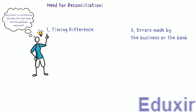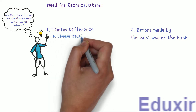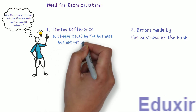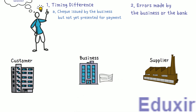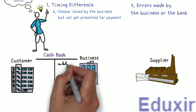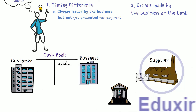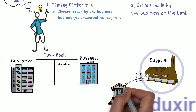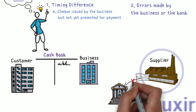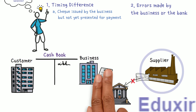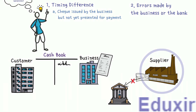One reason for timing difference is checks issued by the business but not yet presented for payment. When the business issues a check to the supplier or creditor, it is immediately entered on the credit side of the cashbook. The supplier or creditor has to encash this check by presenting it at the bank. If they do not present it immediately, it will not appear in the bank statement.